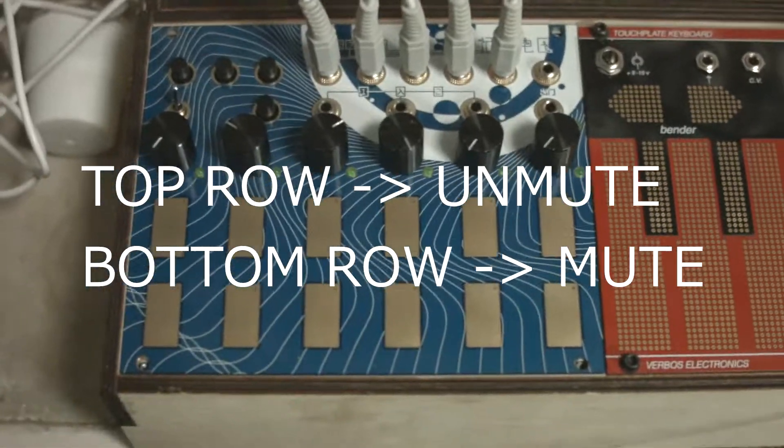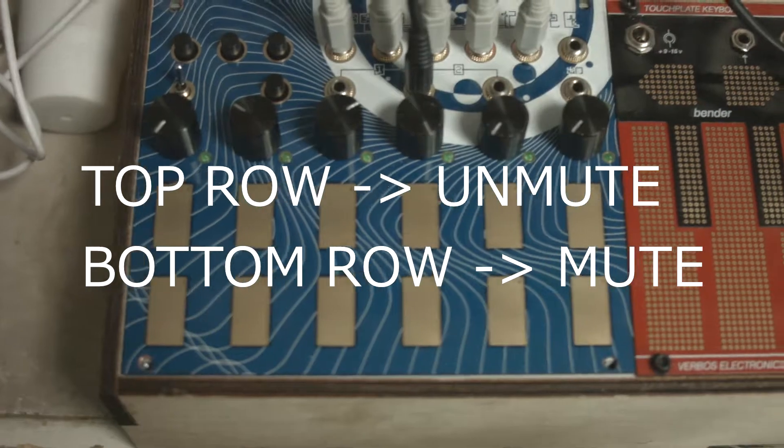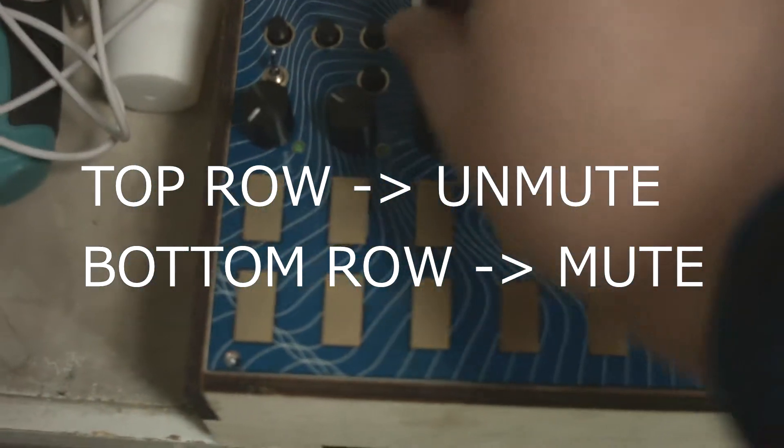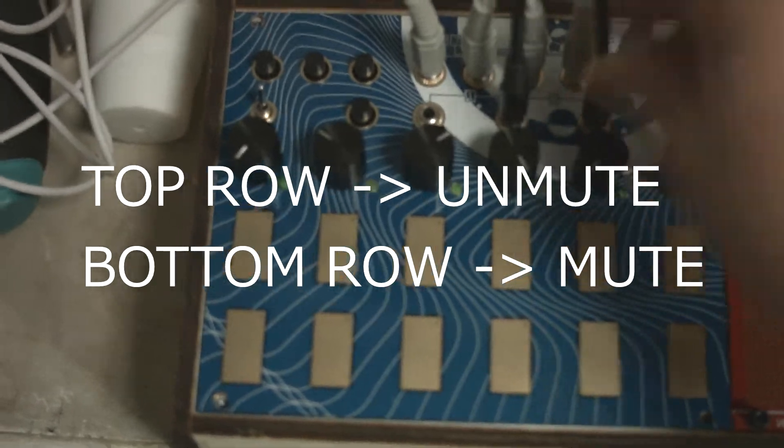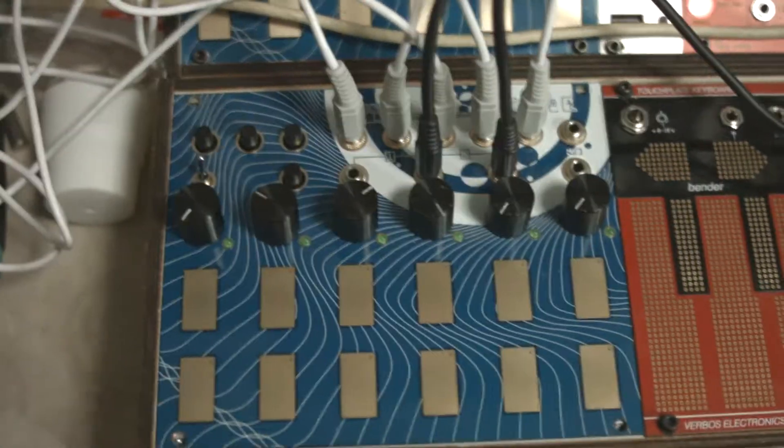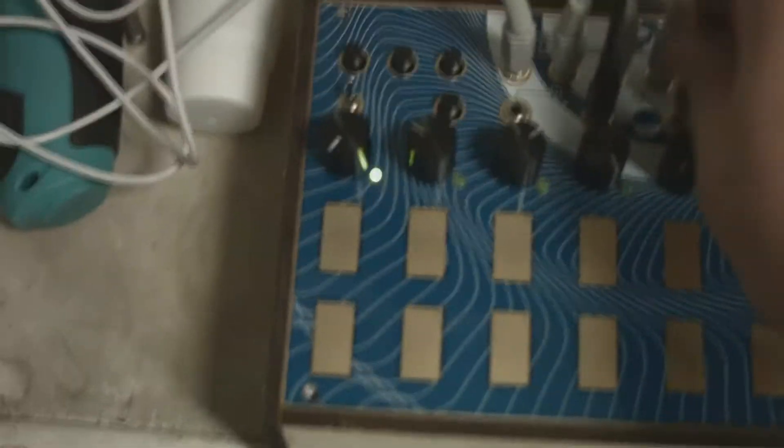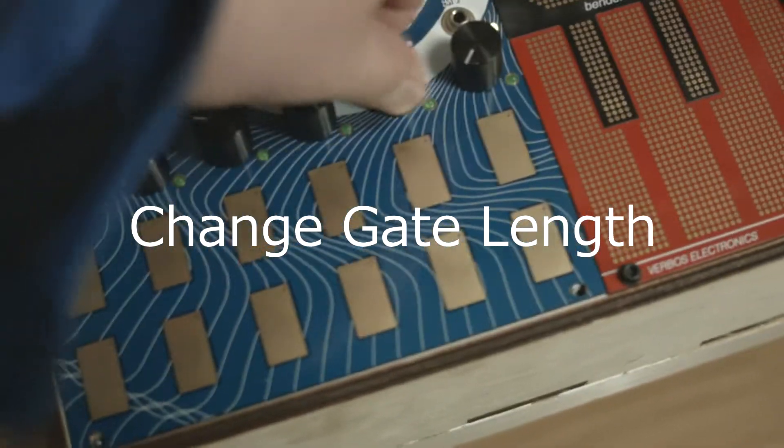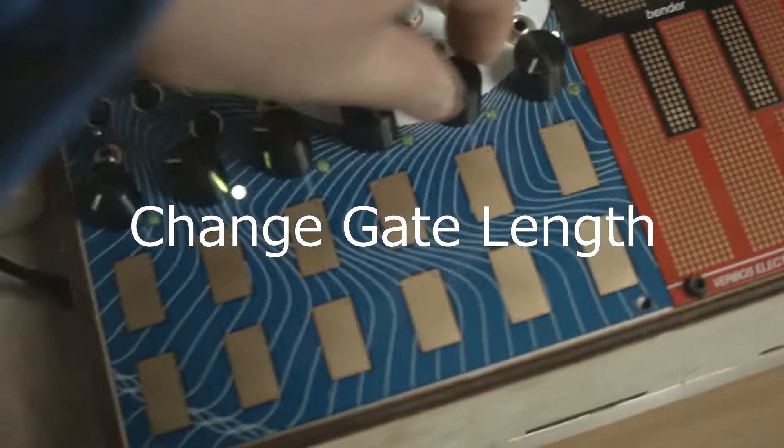Your functions like external clocking, holding, and reset also work in this mode. And you can use the fifth knob to change the gate lengths.